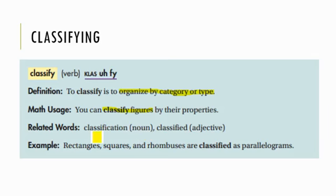Earlier, we discussed how we could classify triangles depending on how many of their sides were congruent to each other and the types of angles in those triangles. That's an example of classification. One of the related words, classified. Example, rectangles, squares, and rhombuses are classified as parallelograms.